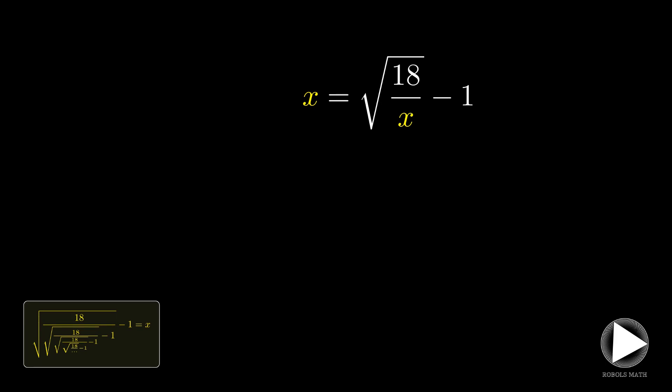From here on out, we will be solving for x using this equation. As standard practice, we isolate the radical on one side, then square both sides, then simplify. We have x plus 1 quantity squared equal to 18 over x, which when simplified is x times quantity x plus 1 squared equals 18.